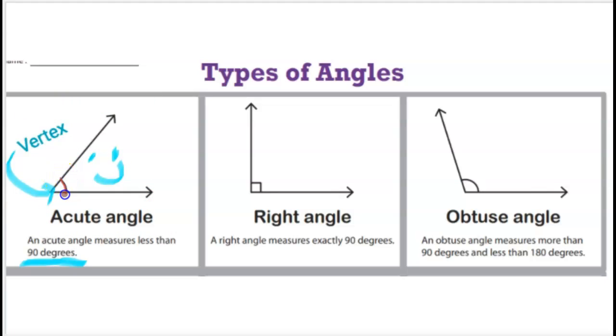So when you measure it, this inside part between these two lines, the interior part of your angle is what's being measured. And if that is less than 90 degrees, it's an acute angle. So think of it as being, oh, so cute, it's little.